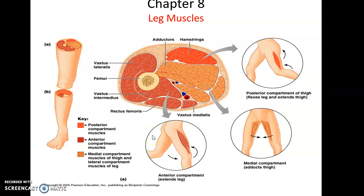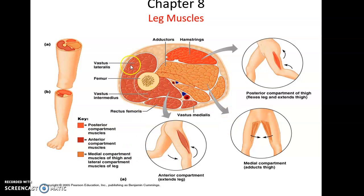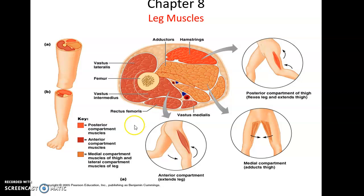Moving on to the legs — here is a section of the thigh. The thigh has muscles broken up into three compartments: the anterior compartment, where you find the quadriceps femoris muscle group; the medial compartment, where you find the adductor group; and the posterior compartment, where you find the hamstrings.